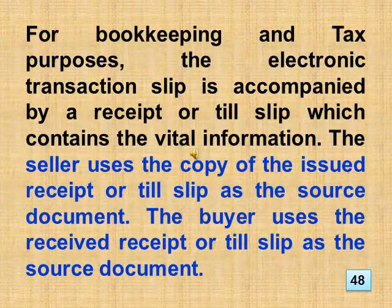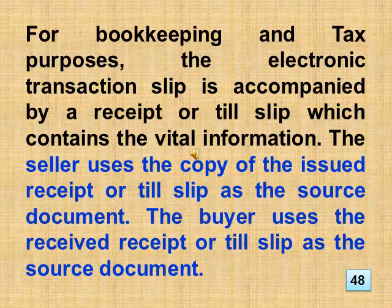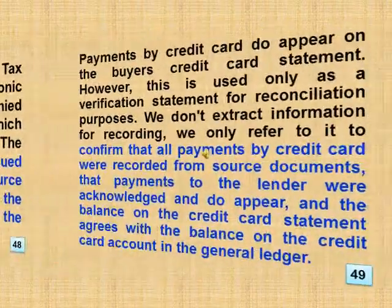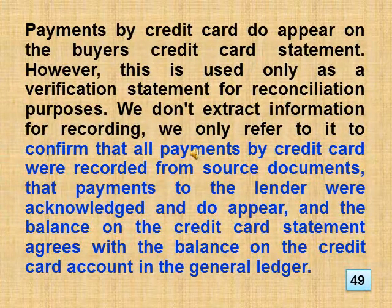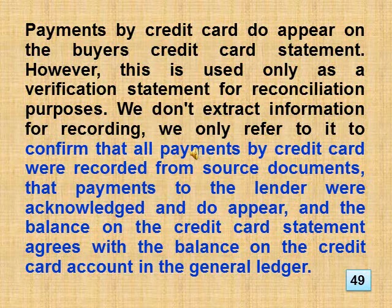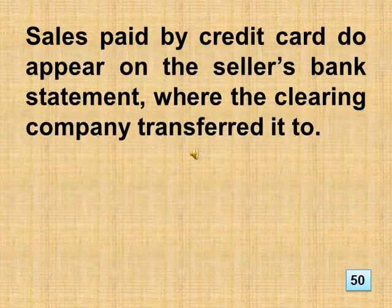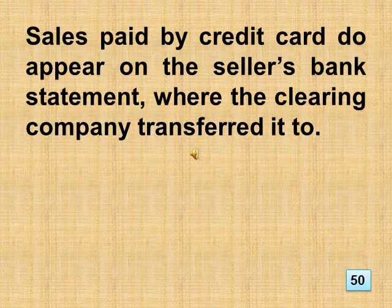For bookkeeping and tax purposes, the electronic transaction slip is accompanied by a receipt or till slip which contains the vital information. The seller uses the copy of the issued receipt or till slip as the source document. The buyer uses the received receipt or till slip as the source document. Payments by credit card do appear on the buyer's credit card statement. However, this is used only as a verification statement for reconciliation purposes. We don't extract information for recording — we only refer to it to confirm that all payments by credit card were recorded from source documents, that payments to the lender were acknowledged, and the balance on the credit card statement agrees with the balance on the credit card account in the general ledger. Sales paid by credit card do appear on the seller's bank statement, where the clearing company transferred it to.